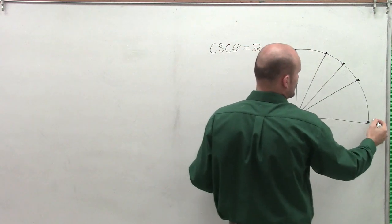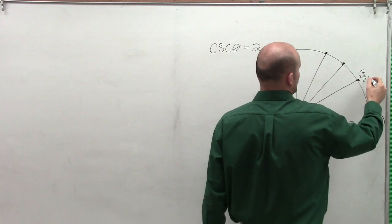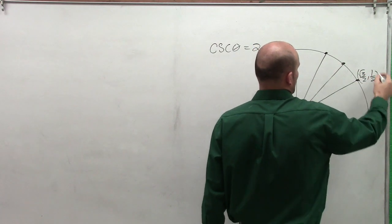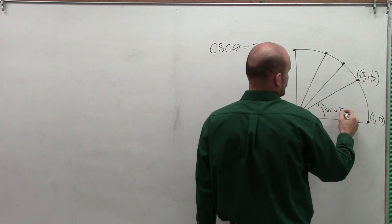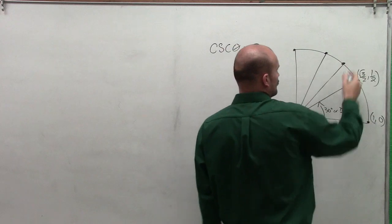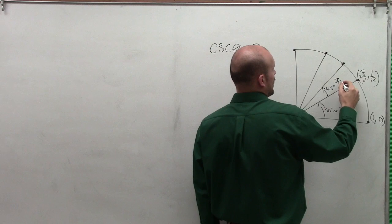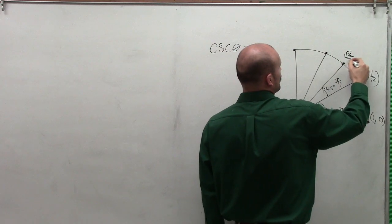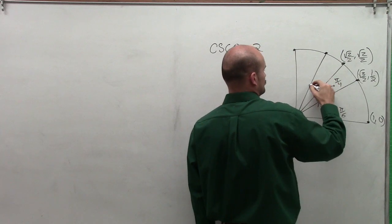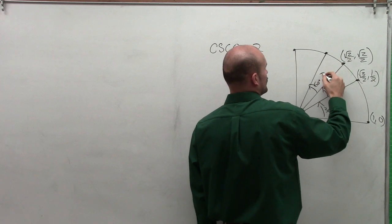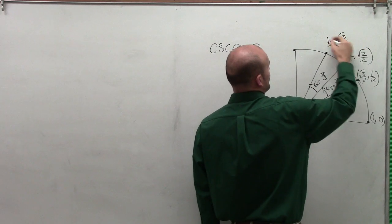So remember our first point is going to be 1, 0. Then over here we have square root of 3 divided by 2 comma 1 half. That's for 30 degrees or pi over 6. For 45 degrees or pi over 4, we have square root of 2 over 2 comma square root of 2 over 2. And then for 60 degrees or pi over 3, we have 1 half comma square root of 3 divided by 2.